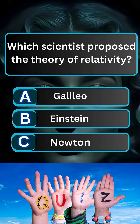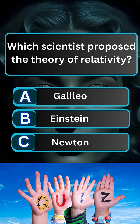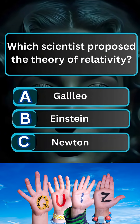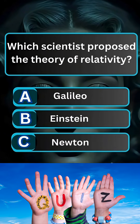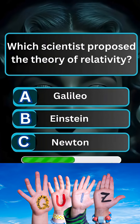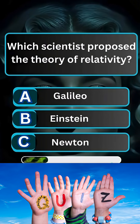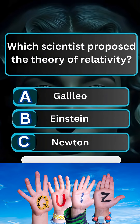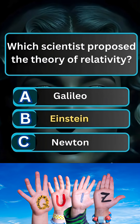Question 3. Which scientist proposed the theory of relativity? Answer B: Einstein.